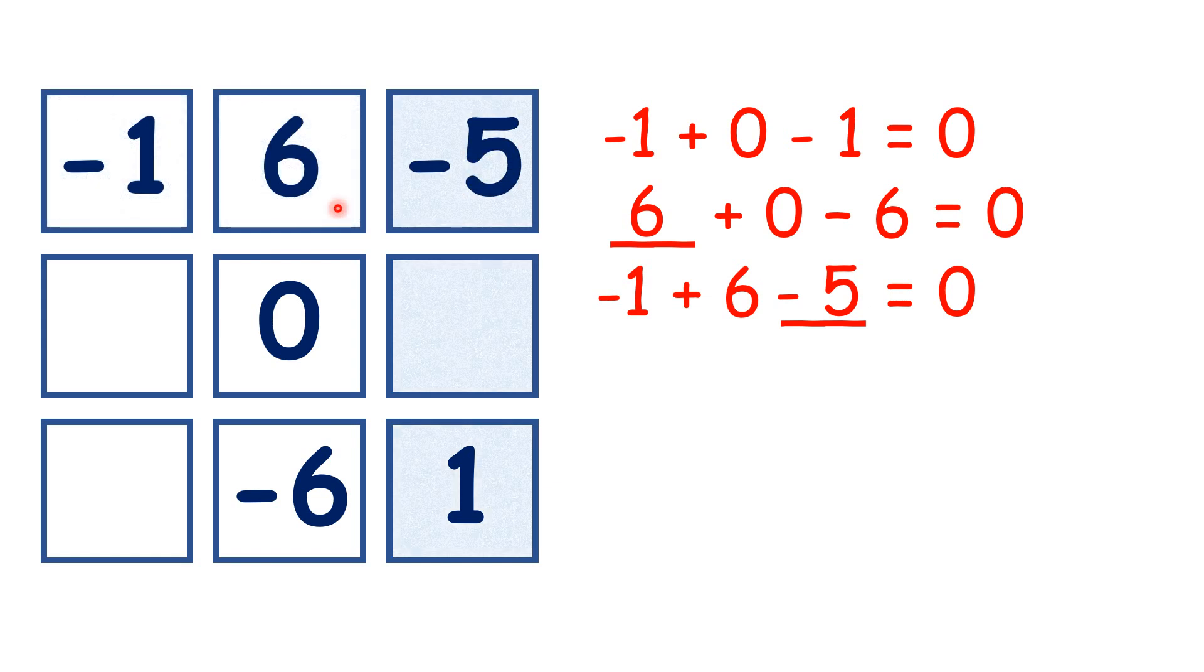If we take this column next, we have minus 5 plus or minus something plus 1 equals 0. Because minus 5 plus 1 is minus 4, we need to add 4 to make a total of 0, so our missing number is 4.